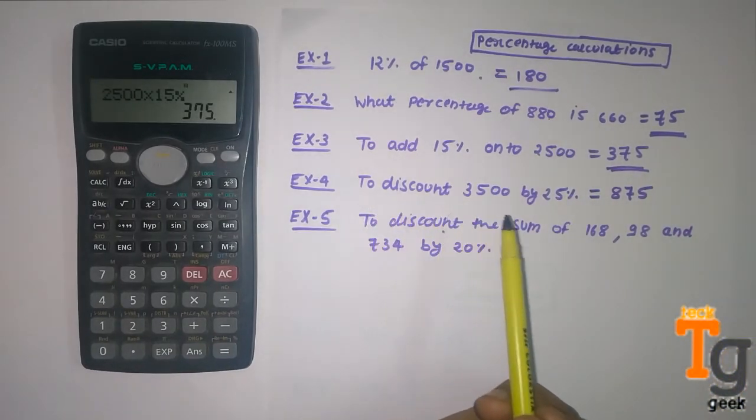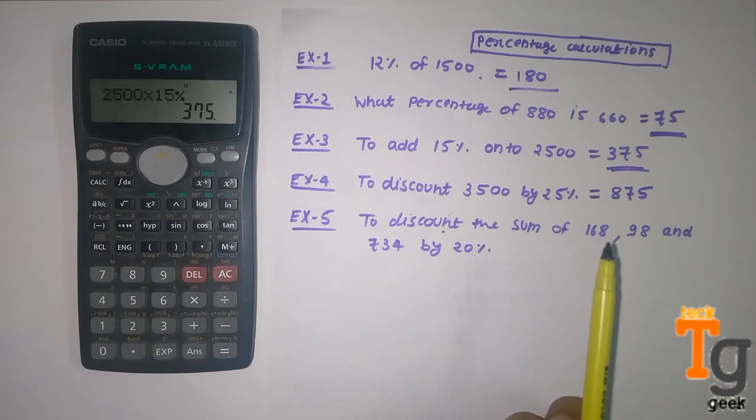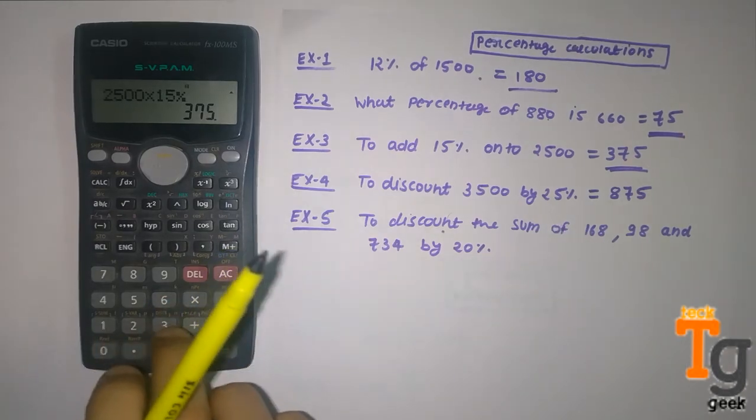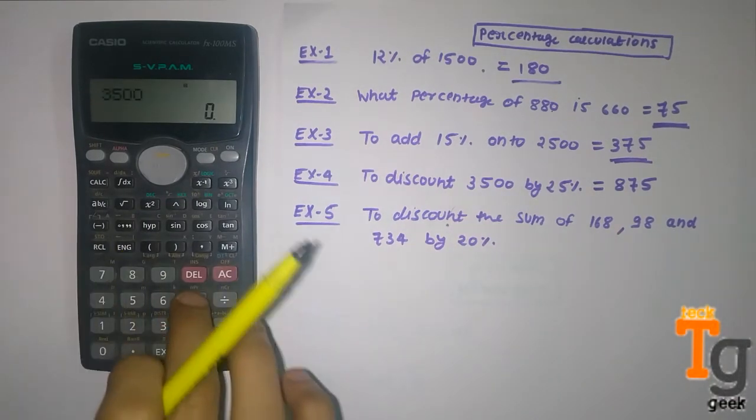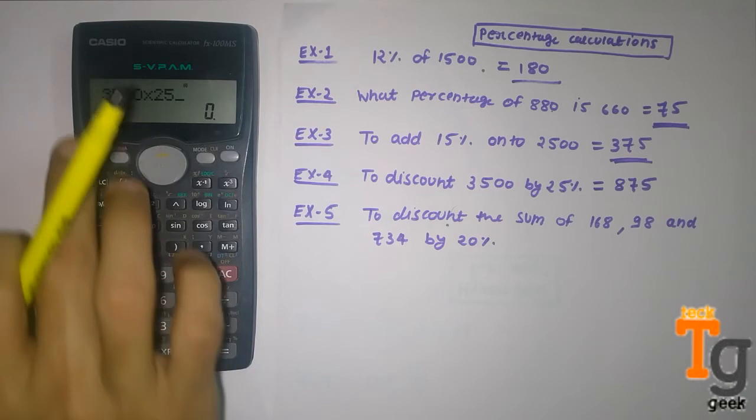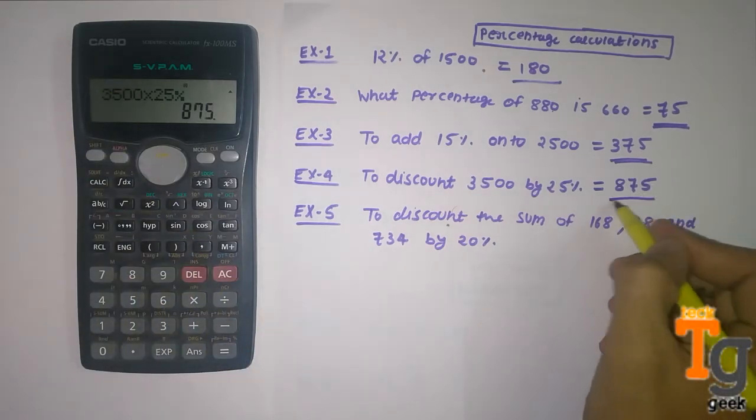And then question 4 to discount 3500 by 25%. So what you have to do: you have to do 3500 times 25, percent, then minus. Then it is 875.